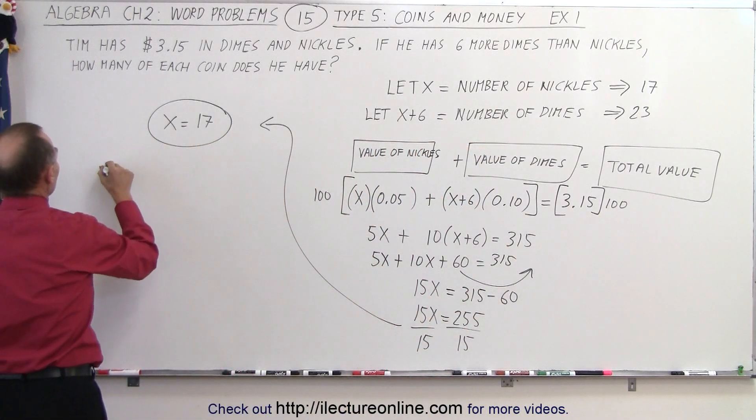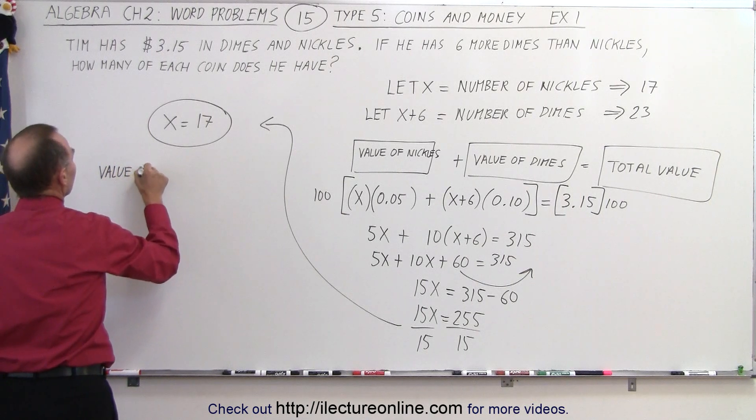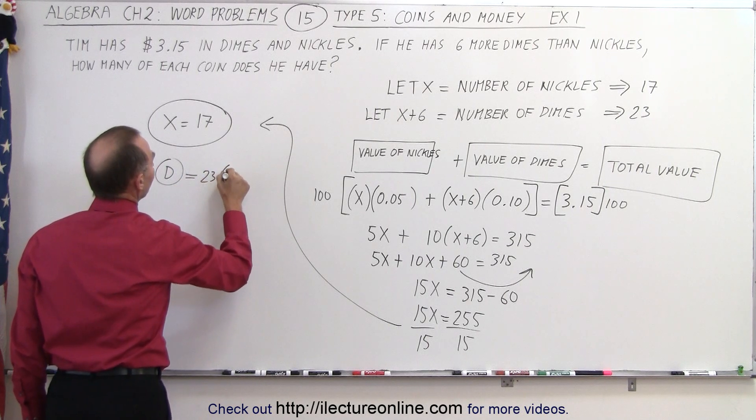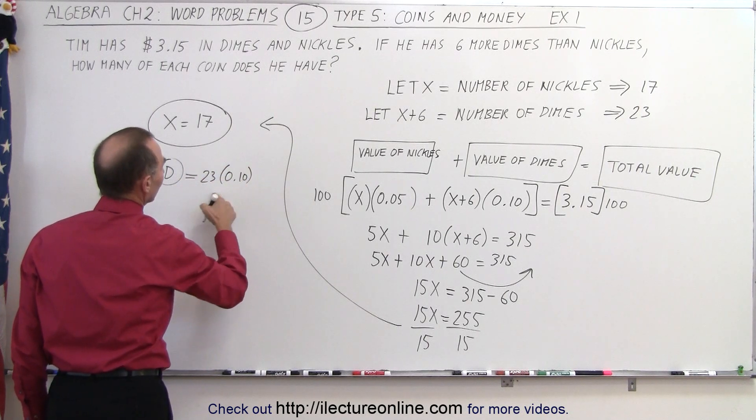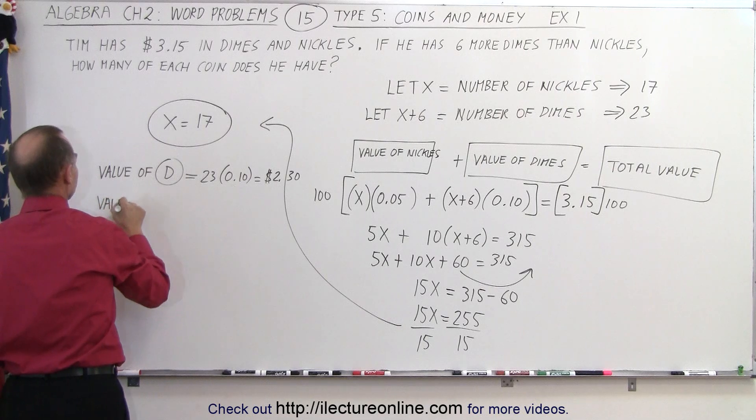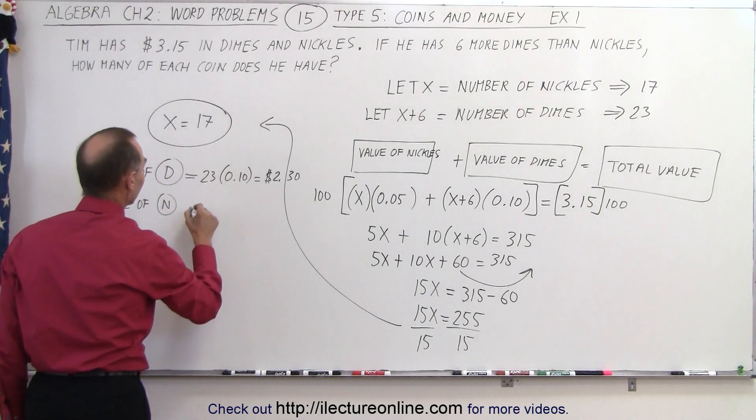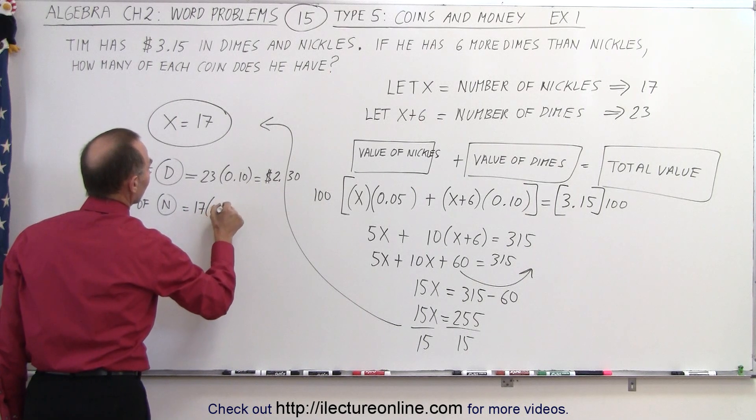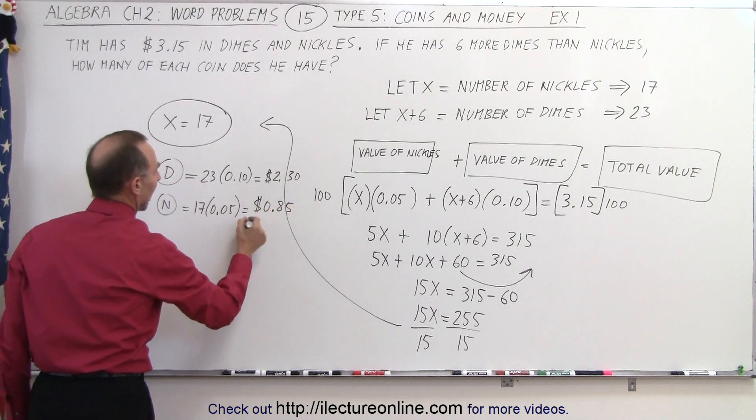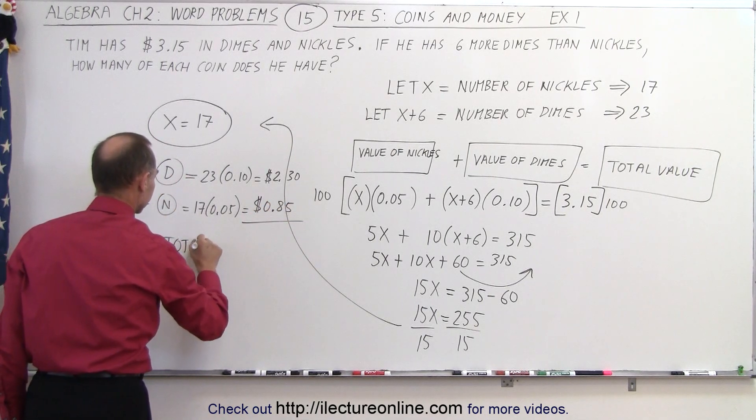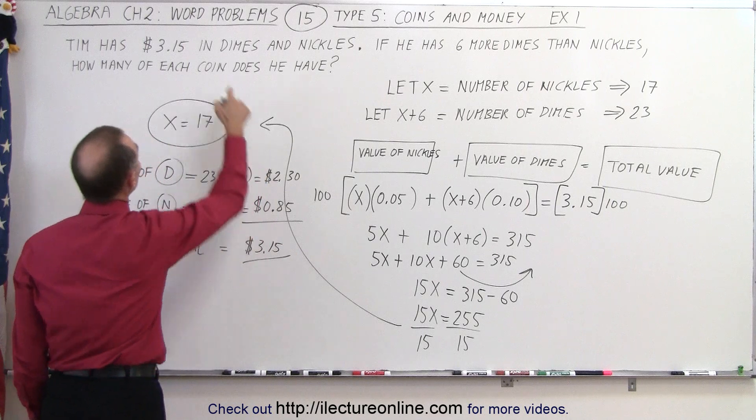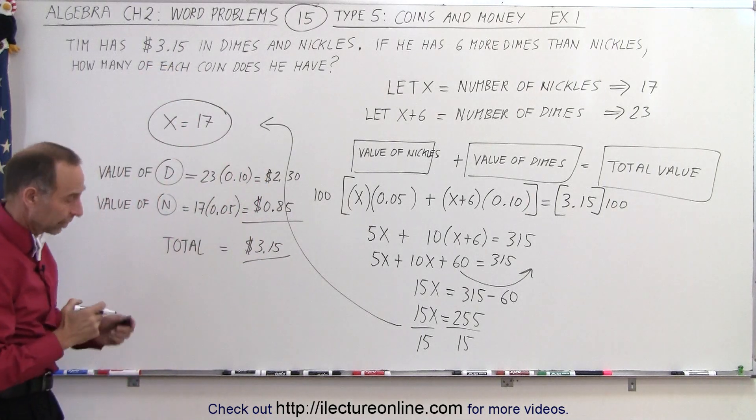So, the value of 23 dimes, that would be 23 times 0.10 dollars, that would be 2 dollars and 30 cents. The value of the nickels, that would be equal to 17 times 0.05, which is 85 cents, 0.85 dollars. And when we add them together, total value is equal to 3 dollars and 15 cents, which is the same as what we started with. So it looks like we did it correctly.